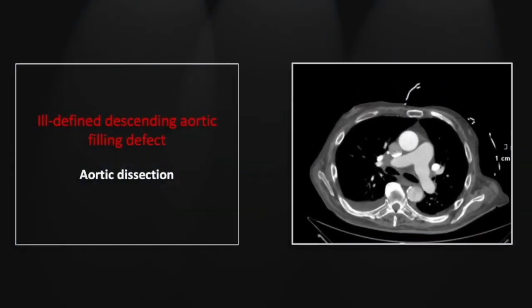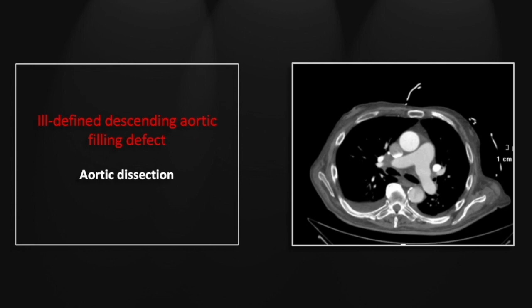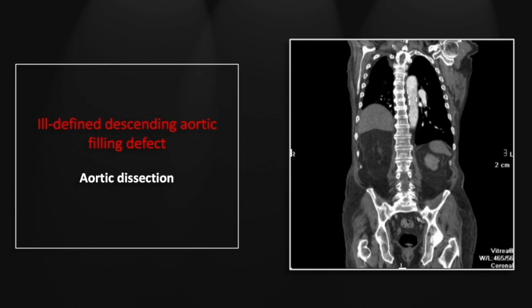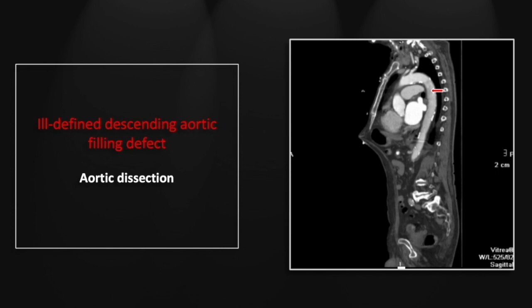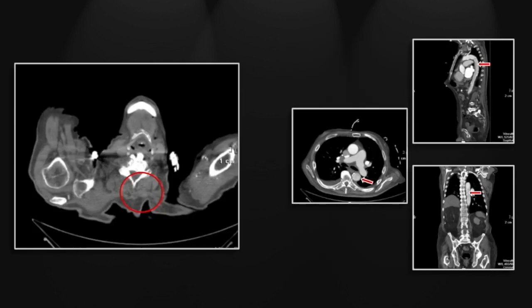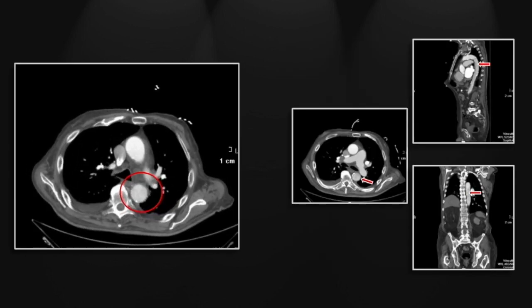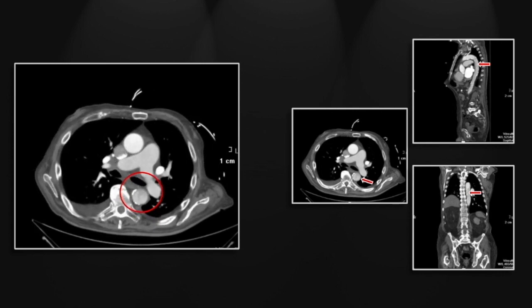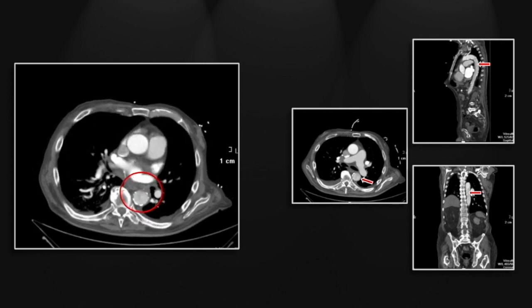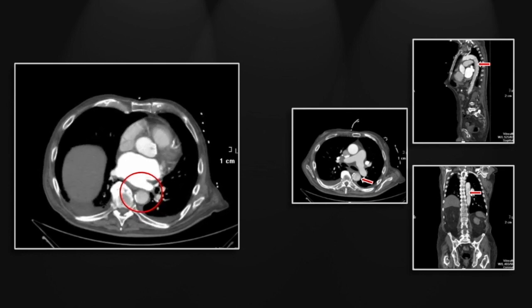Our next case is another aortic dissection. The previous case sets you up to appreciate this one, where there is a very faint but again dynamic and ill-defined filling defect in the descending thoracic aorta — a little better appreciated on the coronal and sagittal views. You can see it beginning there — a typical type B dissection. On the axials you can see it is very dynamic, pulsing in the systolic breeze and moving all about the lumen of the aorta.